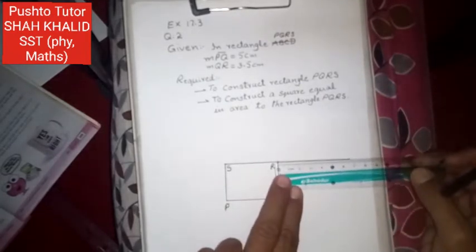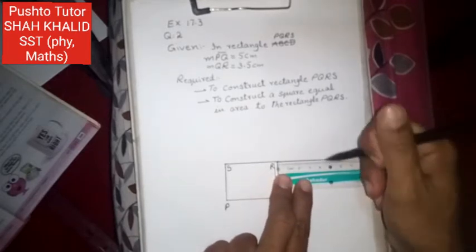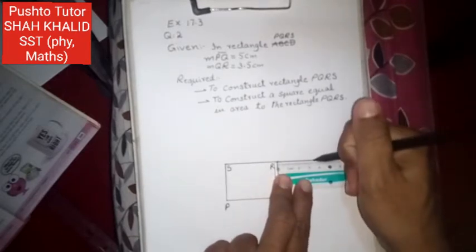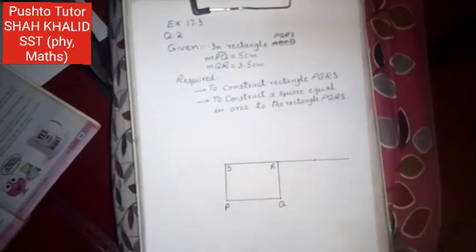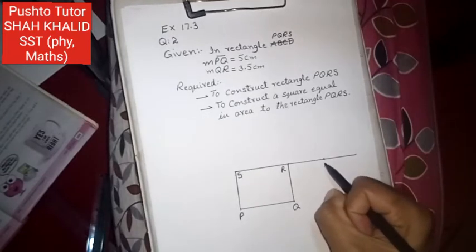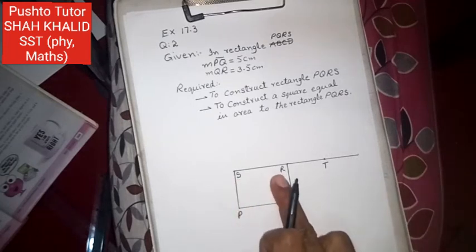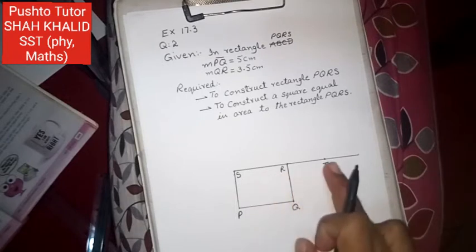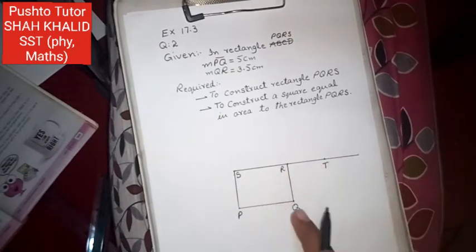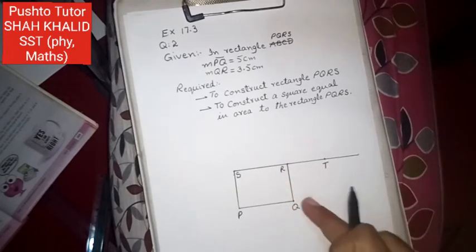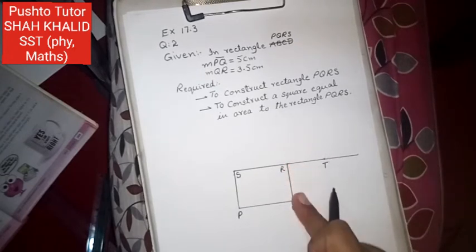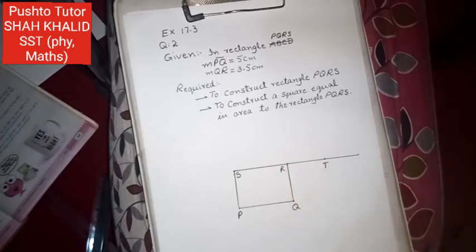Mark this point as T. So produce SR and take a point T on it such that QR is equal to RT. Since QR is 3.5, mark an additional 3.5 on it. That becomes ST.